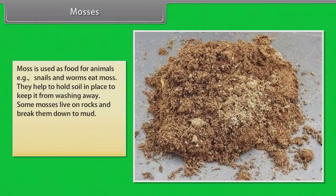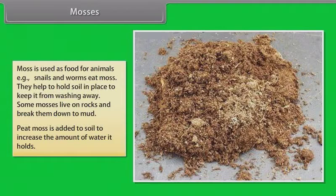Moss is used as food for animals. That is, snails and worms eat moss. They help to hold soil in place to keep it from washing away. Some mosses live on rocks and break them down to mud. Peat moss is added to soil to increase the amount of water it holds.